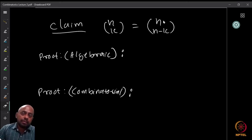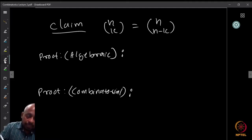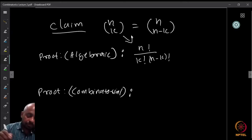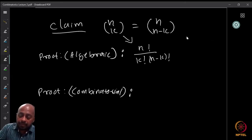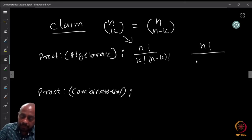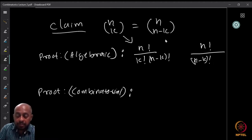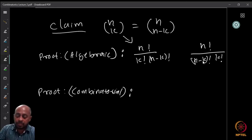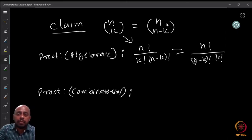There is the standard algebraic proof — very easy. n choose k is n factorial divided by k factorial times n minus k factorial. What is n choose n minus k? It is n factorial divided by n minus k factorial times n minus n minus k factorial. Since n minus n minus k equals k, we get k factorial, giving n factorial divided by k factorial times n minus k factorial. These two are equal, so n choose k equals n choose n minus k.